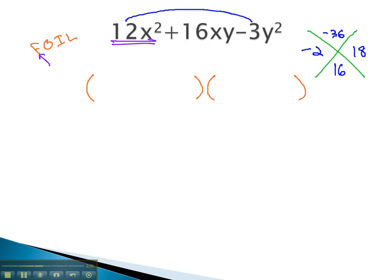There is one other way to multiply to 12, and that would be 6x times 2x.